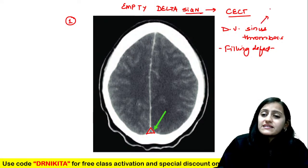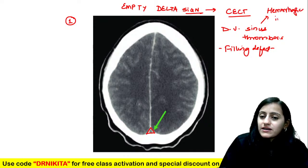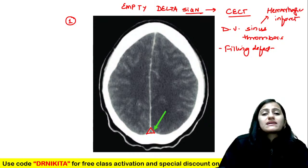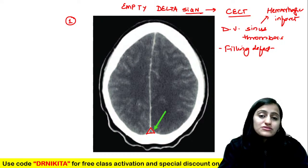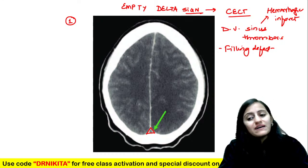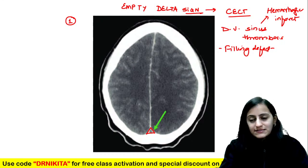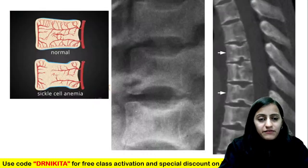Remember that venous infarct generally presents as hemorrhagic infarct — in contrast to the arterial ischemic infarct, venous infarcts are generally hemorrhagic.